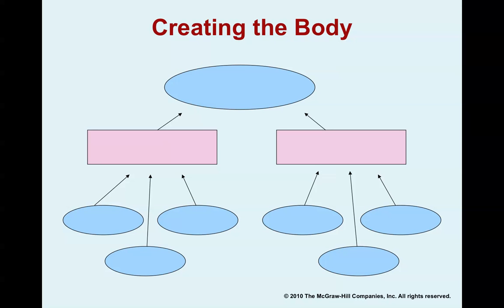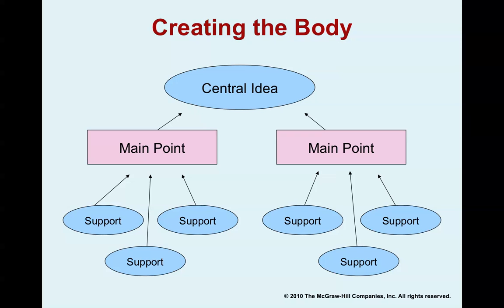Let's take a look at it visually. For visual learners, this is a schematic overview of what it takes to create the body. The oval at the top represents our central idea, developed by two main points represented by the pink triangles. The main points are supported by ovals at the bottom, which represent all of our support materials — things like examples, statistics, and narratives. Let's go through this process with an example.